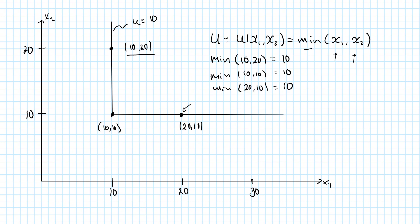By exactly the same argument, you can see that any bundle on this L-shaped indifference curve will be associated with a utility of 10. You can also see that those are the only bundles that will give you a utility level of 10.